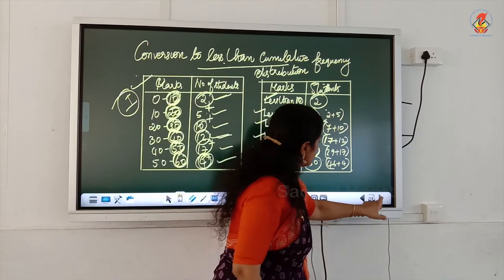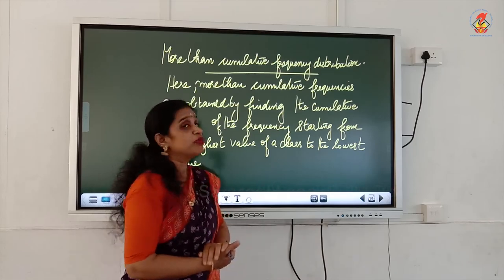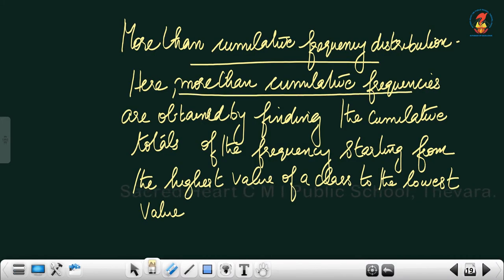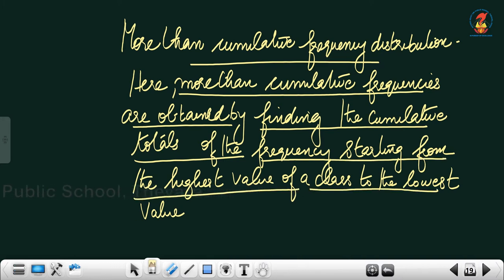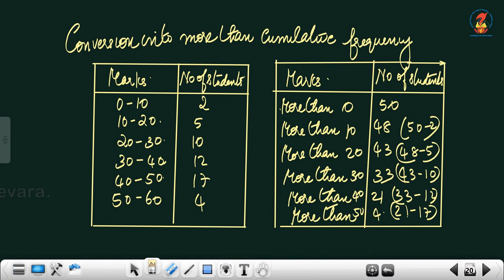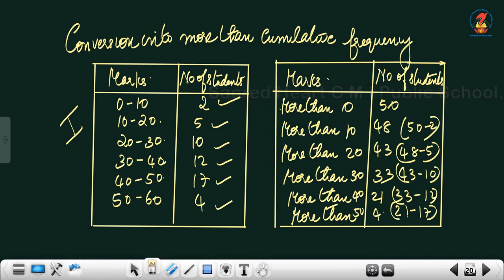Next is the more than cumulative frequency distribution. Here, more than cumulative frequencies are obtained by finding the cumulative totals of the frequency starting from the highest value of the class to the lowest value. Using the same example (0 to 10 through 50 to 60, with frequencies 2, 5, 10, 12, 17, and 4):